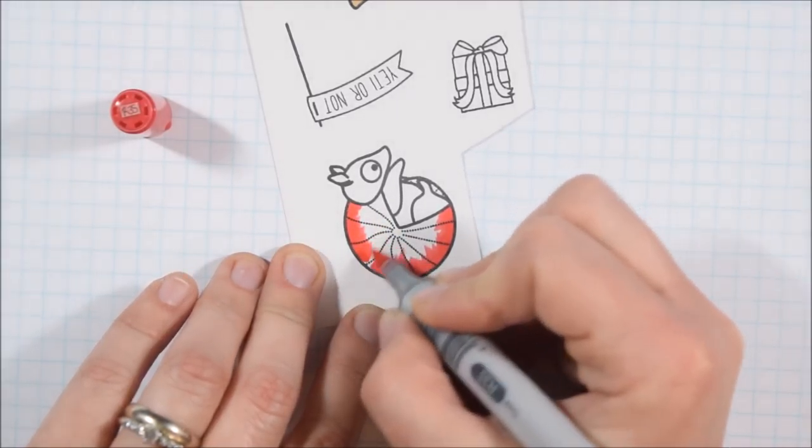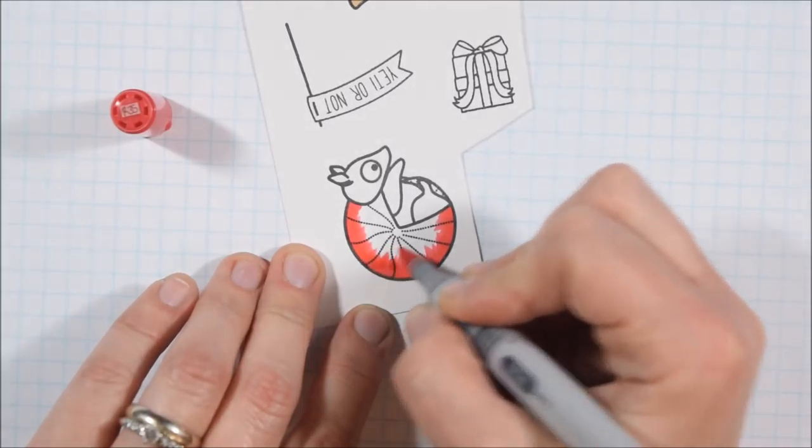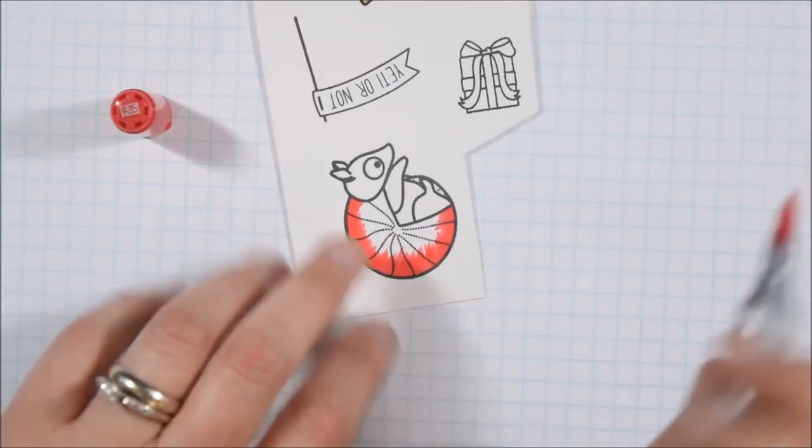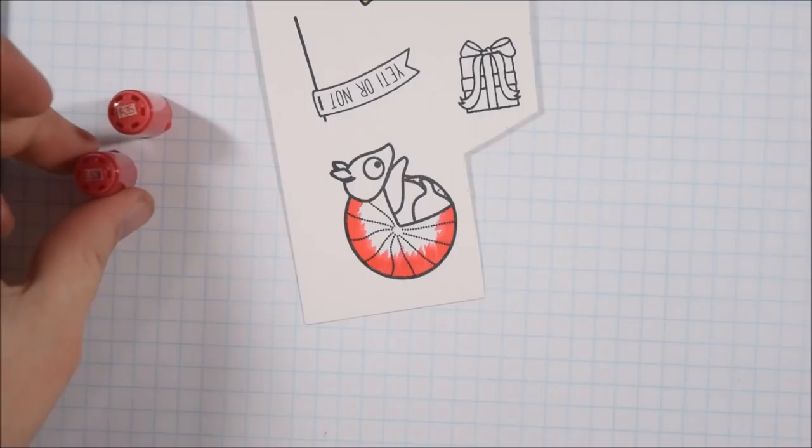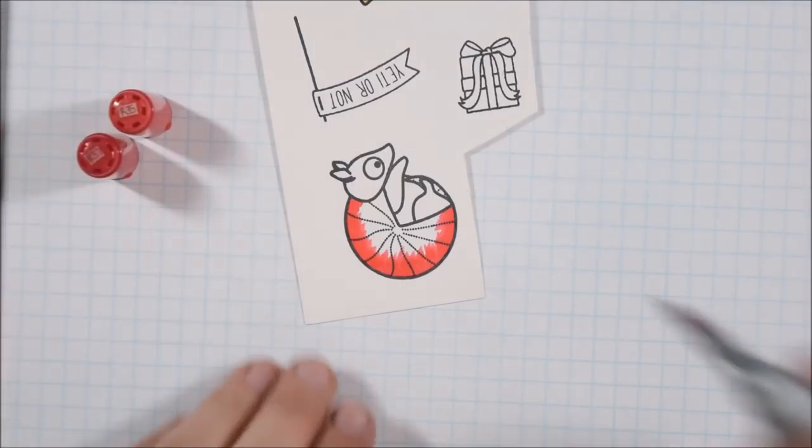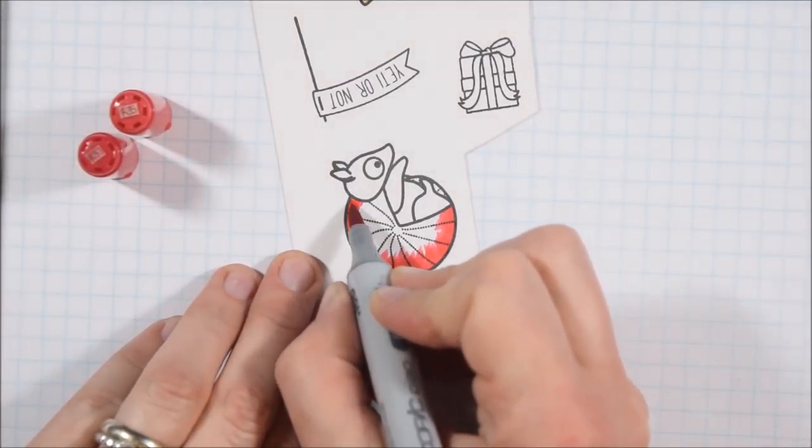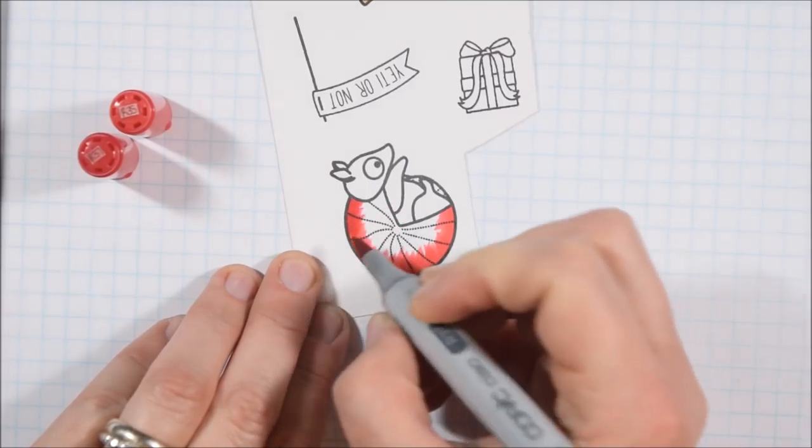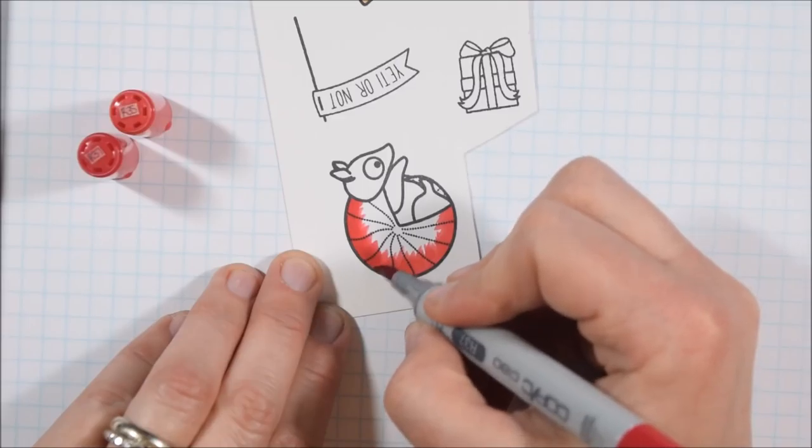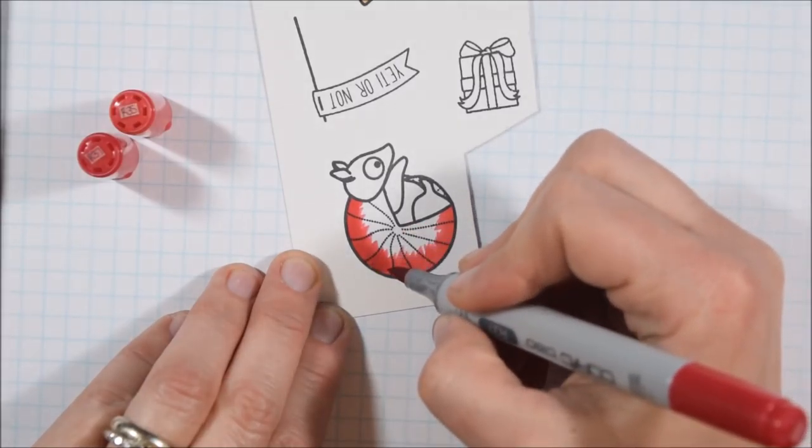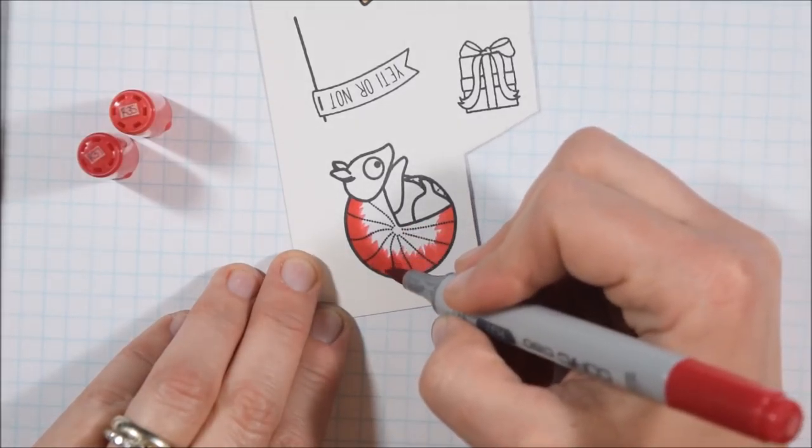To get started, I want to talk briefly about the coloring in real time. I'm not going to color the whole thing, just a few bits to explain my process. I'm going to use R35, 37, and 39. I'll start by putting the color where I want it to be the darkest and I'm not going to pull my lightest color all the way to the edge.